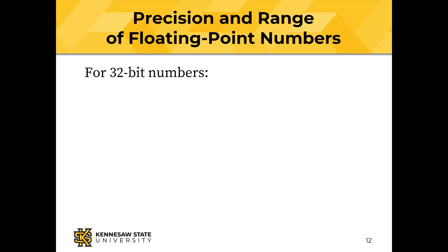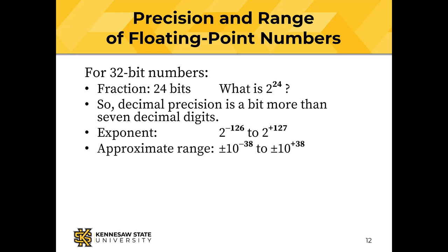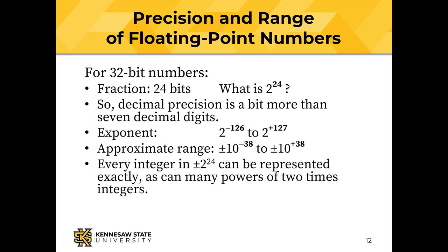Let's consider how the precision and range of floating point numbers works, using 32-bit numbers as our example. The fractional part is 24 bits. 2 to the 24th is a little more than 16 million, and that gives us decimal precision of a little more than 7 decimal digits. The exponent can range from 2 to the minus 126 to 2 to the plus 127. That gives us an approximate range of plus or minus 10 to the minus 38 to plus or minus 10 to the plus 38. Every integer in plus or minus 10 to the 24th can be represented exactly using this format, and many powers of 2 times integers can be represented exactly, but everything else is an approximation.